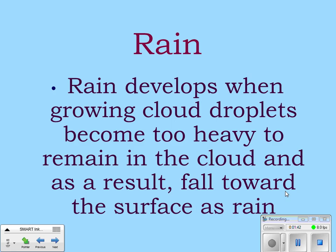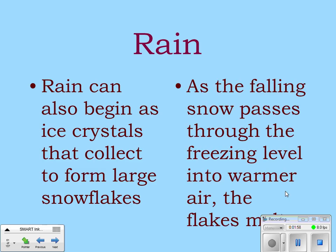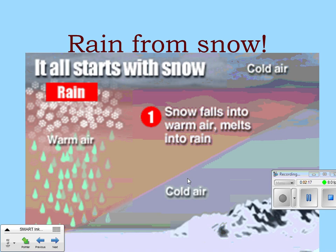Rain develops when growing cloud droplets become too heavy to remain in the cloud and fall toward the surface. Rain can also begin as ice crystals that collect to form large snowflakes, and then as the falling snow passes through the freezing level into warmer air, the flakes will melt and turn back into water — that's rain. In the diagram, you have cold air at both the top and surface; it all starts with snow, which falls into warm air and melts.